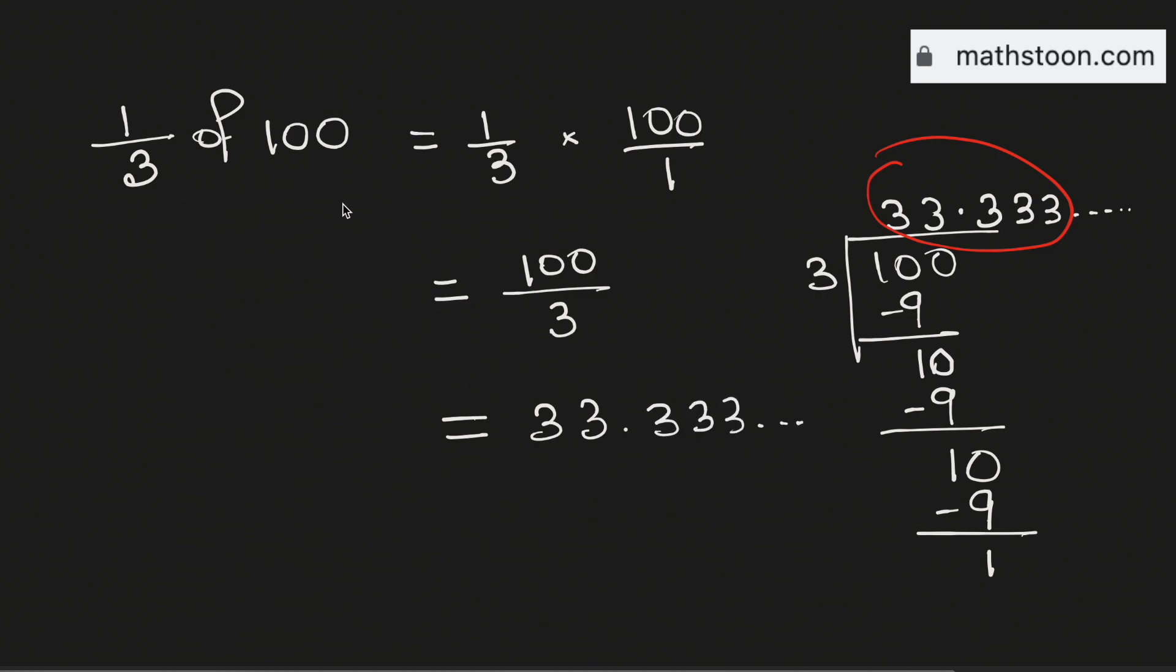Therefore one third of 100 is equal to 33.333 and so on. This can be rewritten as 33.3 bar and this is our final answer. Thank you for watching.